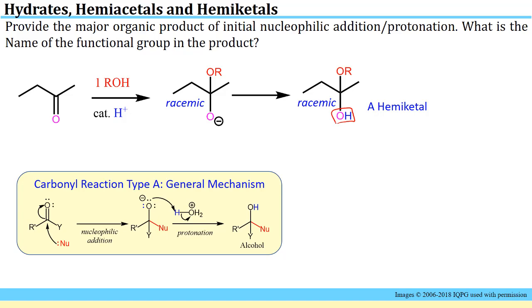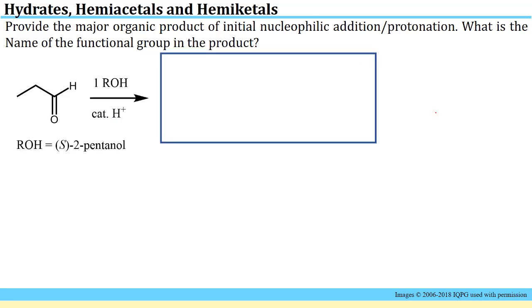The next step is simply protonation of that O to yield the OH group down here. Since this is made from a ketone and we've put an OR group on, this is a hemiketal.